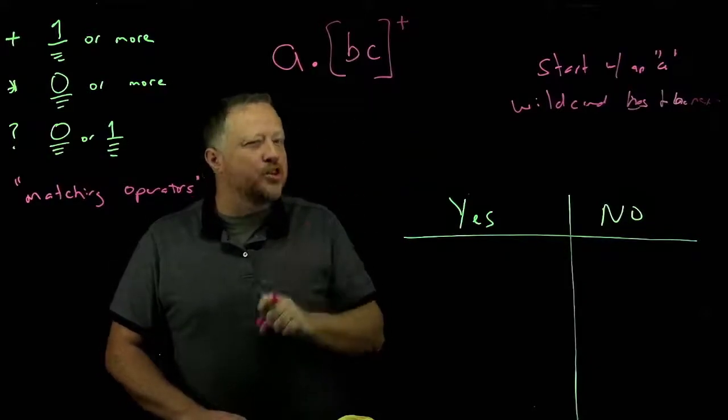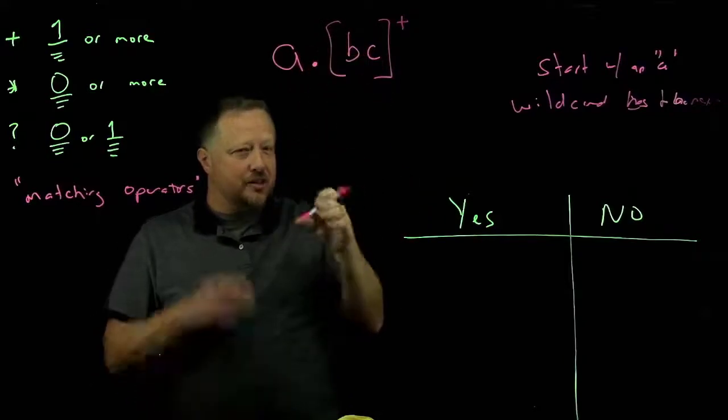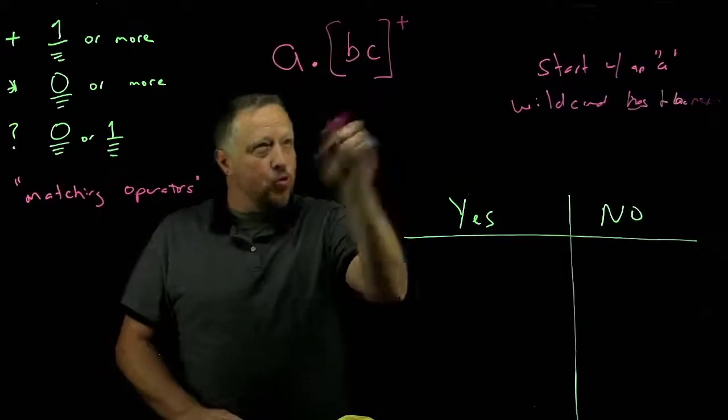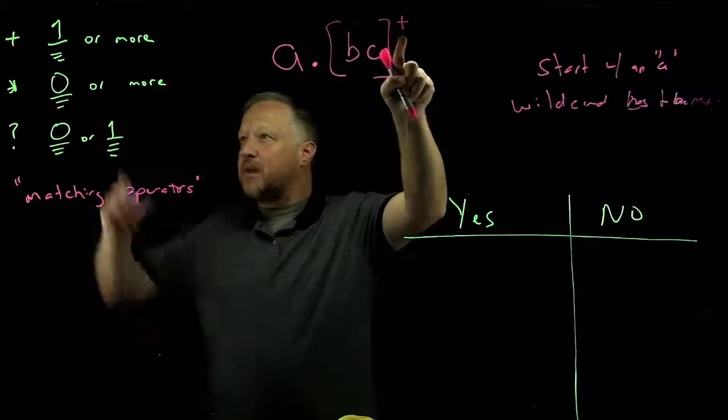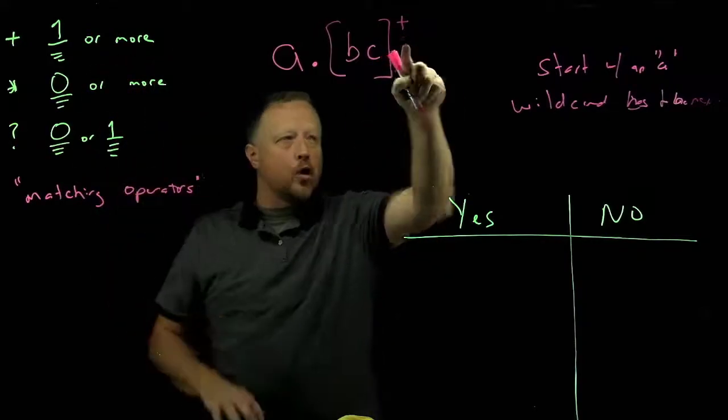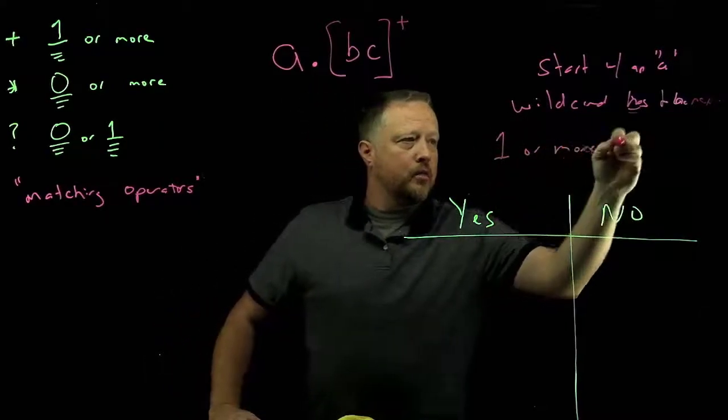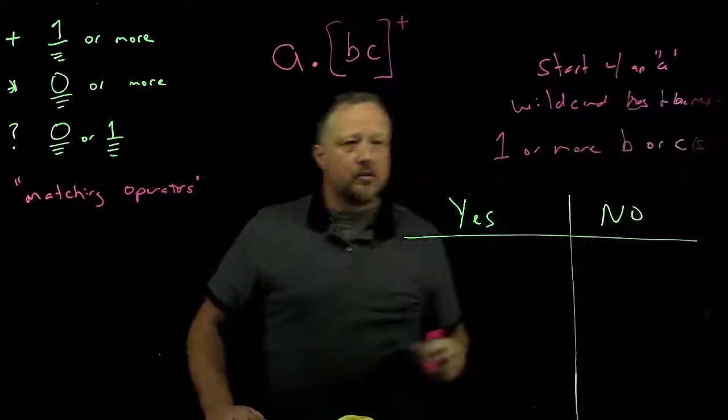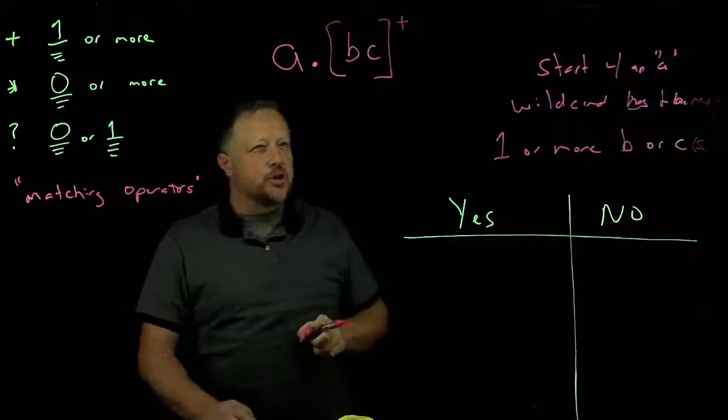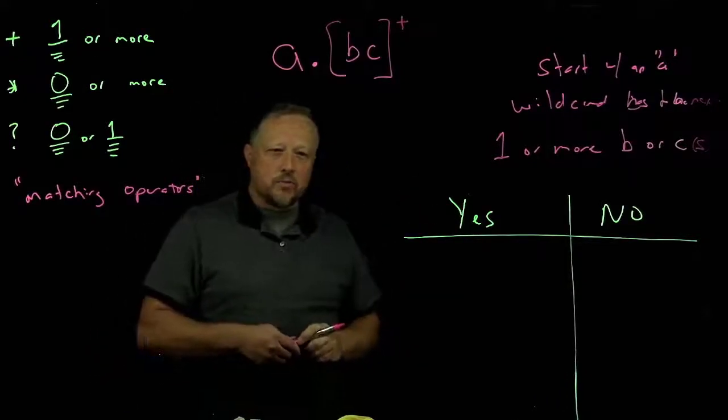This is B or C. So we have to be careful. Notice it's not in parentheses. It's in the square braces. So that means one or the other. Now, before I do that, I'm going to take care of this. The plus means one or more. So one or more B or Cs. Okay. So that's where things get interesting on this last one here. So we'll go over the yeses and nos here in a minute and go from there.